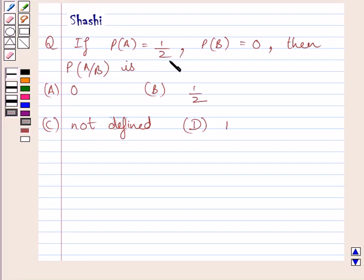If P(A) is equal to 1 upon 2, or we can say, if probability of A is equal to 1 upon 2, probability of B is equal to 0,